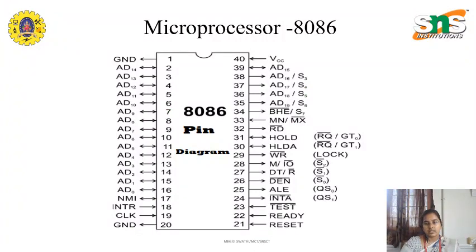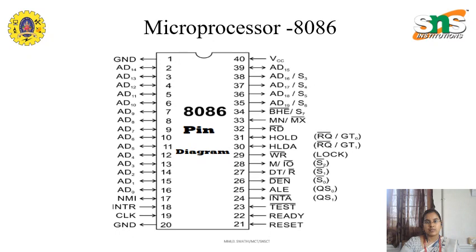As we have already discussed the architecture, the whole architecture is now compressed into the 40-pin IC. Remember that IC is an integrated chip. Compressing the whole architecture, that is the Bus Interface Unit and Execution Unit, the two major units are compressed into the 40-pin IC. Starting from the VCC, as we know for every IC we need the VCC pin. We have the VCC, and we should keep the proper grounding. We have grounding purpose pins — 20 pins are given for the grounding purpose.